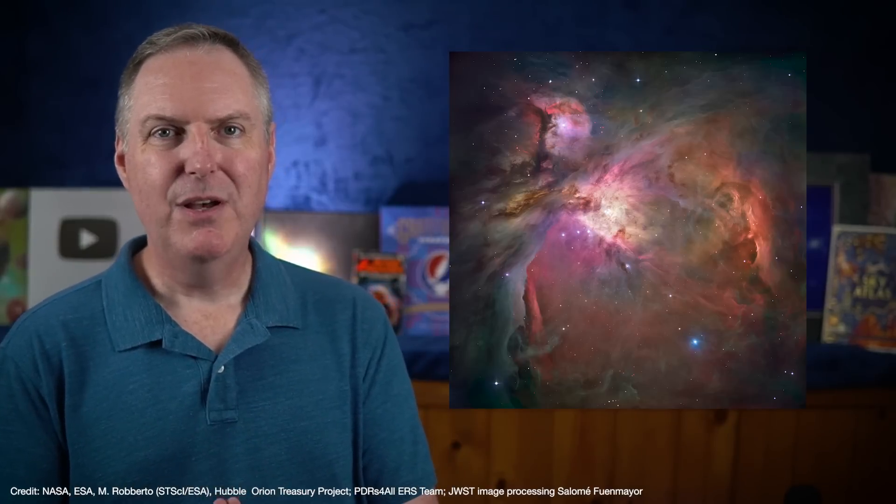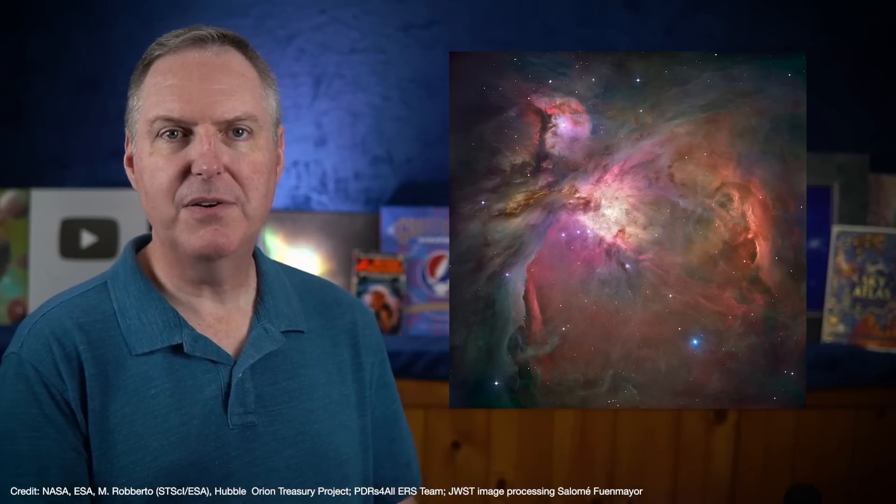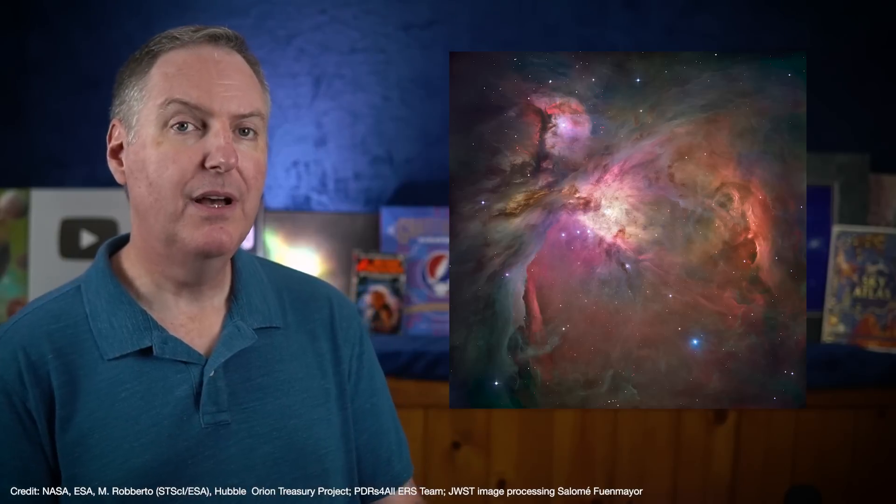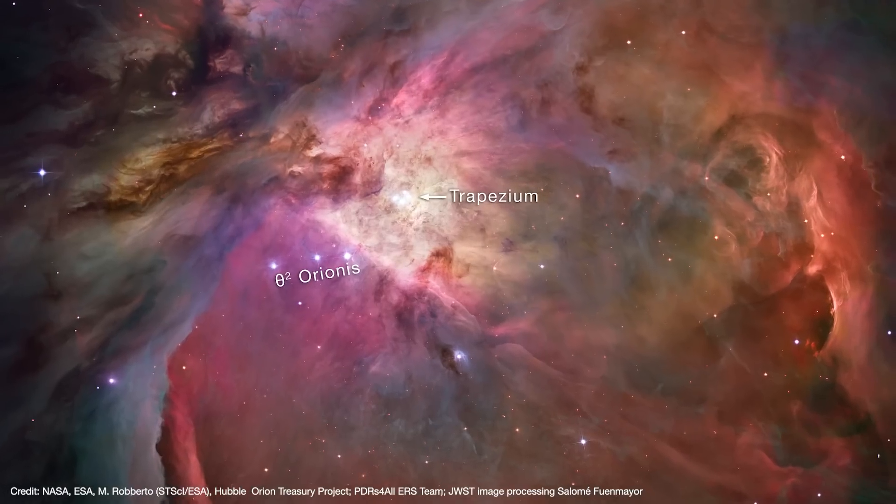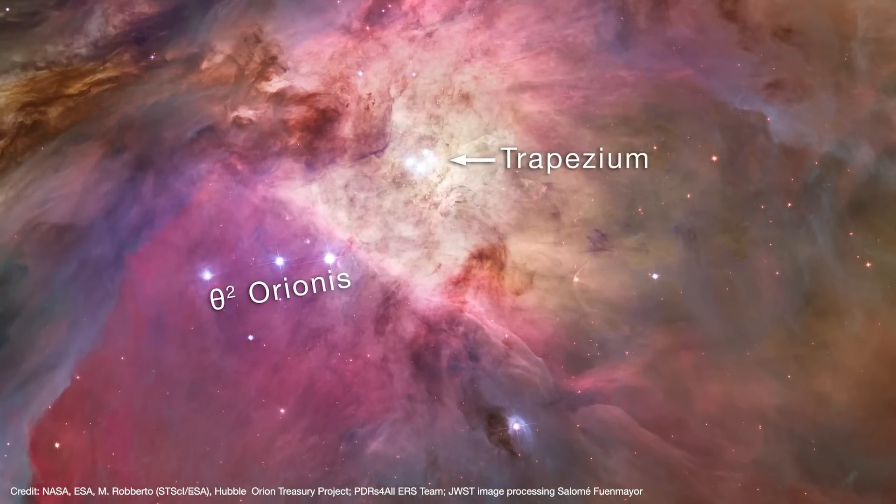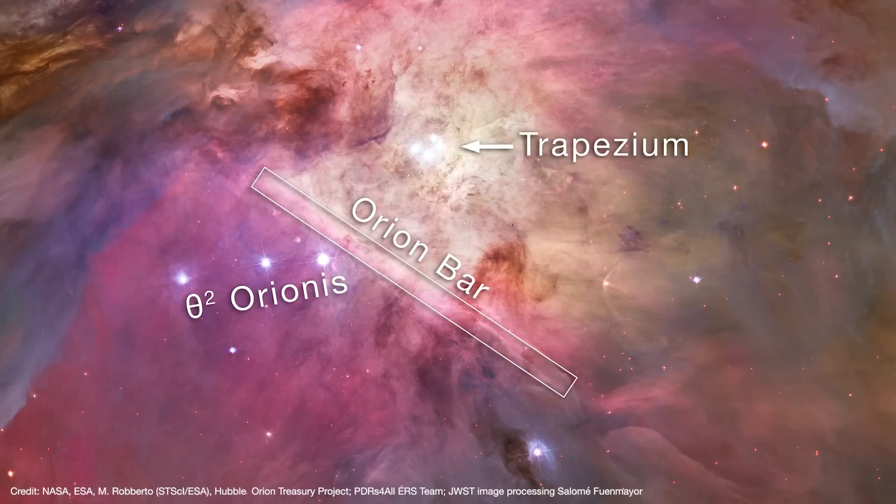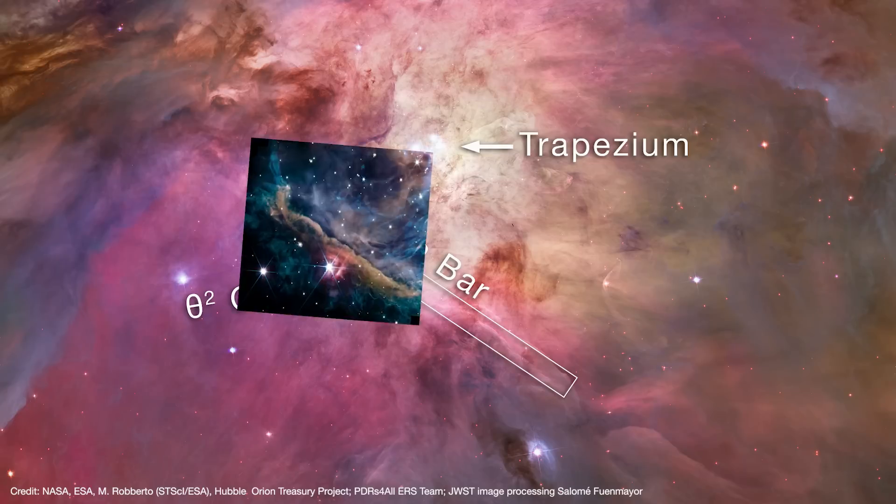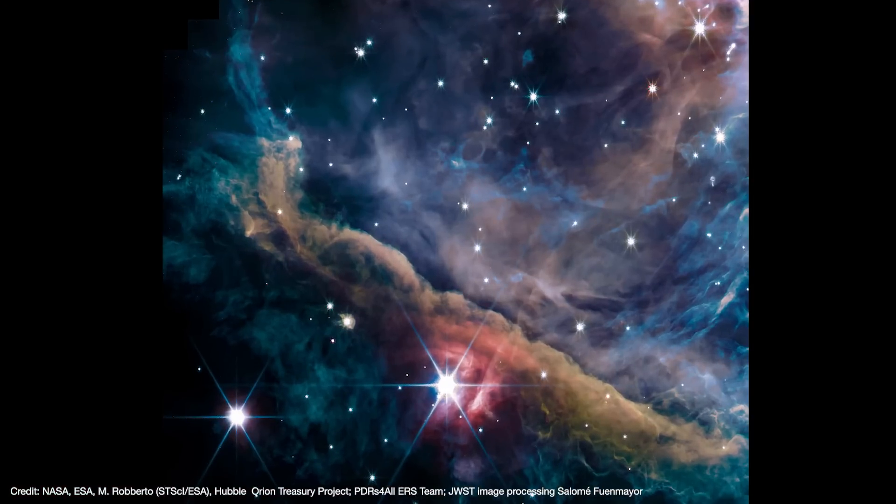One of its early release science programs was to investigate parts of the Orion Nebula only 1,300 light years down the road. Near the center of the nebula is a line of three stars that lead to a kind of ridge called the Orion Bar. And the ERS team released Webb's first image of the Orion Nebula.